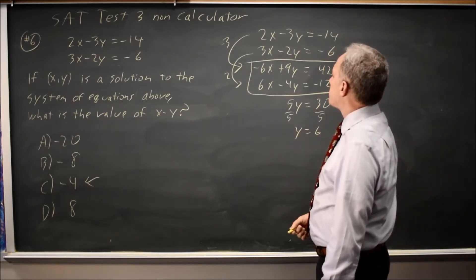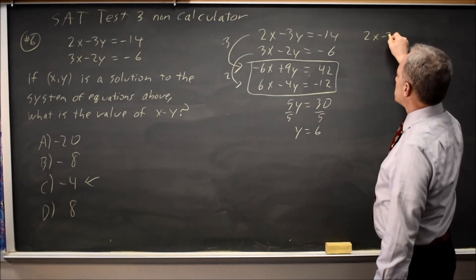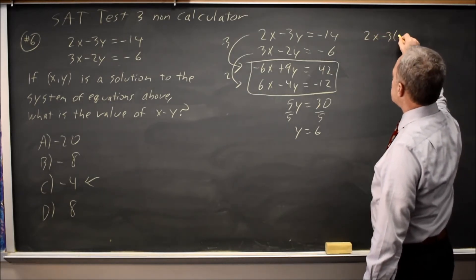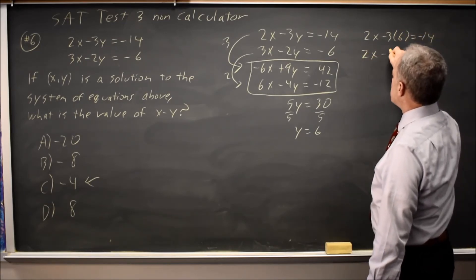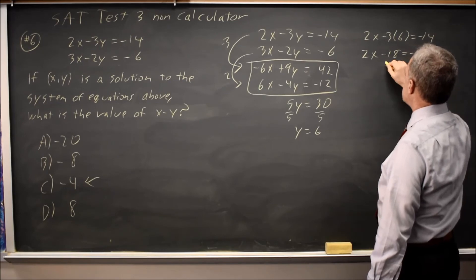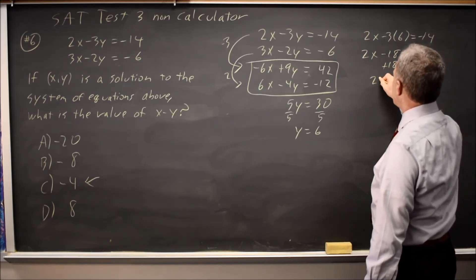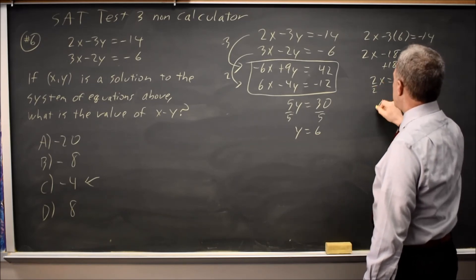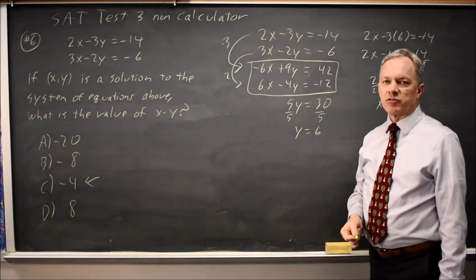I can substitute that back in. And I'm exactly where I was on the previous method. 2x minus 3 times 6 equals negative 14. 2x minus 18 equals negative 14. Add 18 to both sides. And I have 2x equals 4. Or x equals 2. And again, x minus y is 2 minus 6 is negative 4.